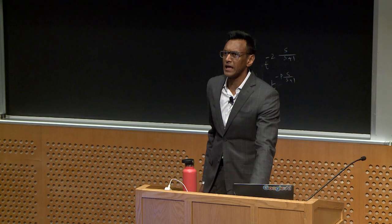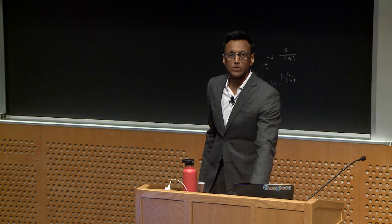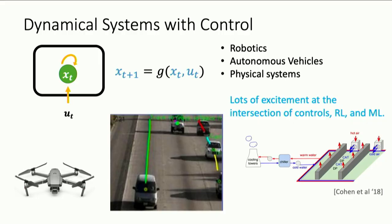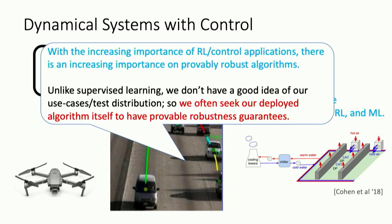Today we'll be looking at some questions with regards to robustness in a control setting. A lot of the excitement is around utilizing controls in a broader set of applications, and with this excitement in terms of downstream applications, there's an increasing need to get robust — and in particular, provably robust — control algorithms.